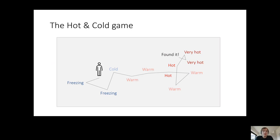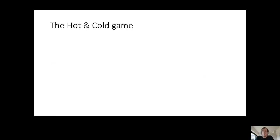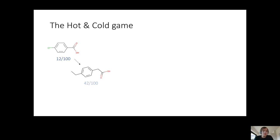This is actually very close to what we're going to do with these molecules. Because we already have this program that has learned the language of molecules — it has learned which molecules are sensible — we can try to play the same hot and cold game using this program. We would start with some molecule, pretty much any molecule, get some score from our biologists and chemists. If the score is low, it's cold. Then we would try to tweak this molecule, give it again to our chemists and biologists and ask for the score again.